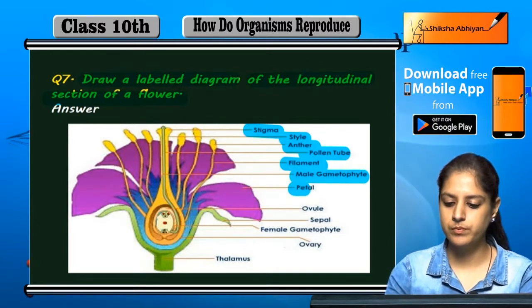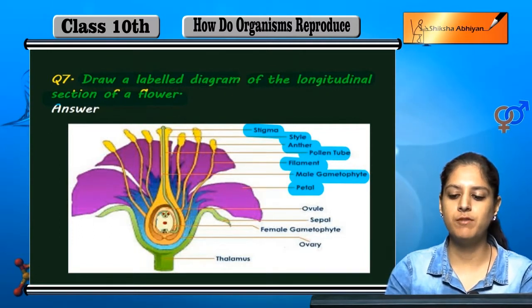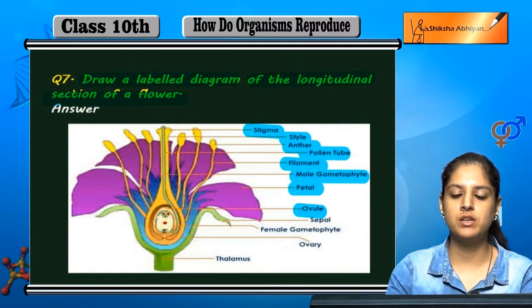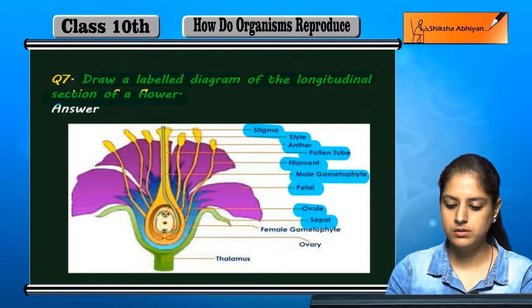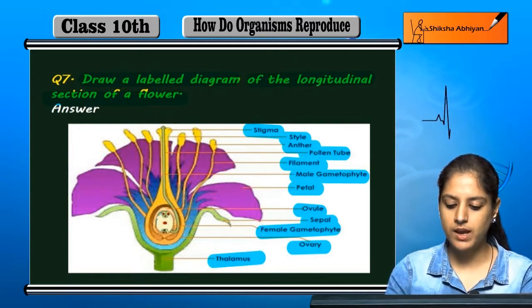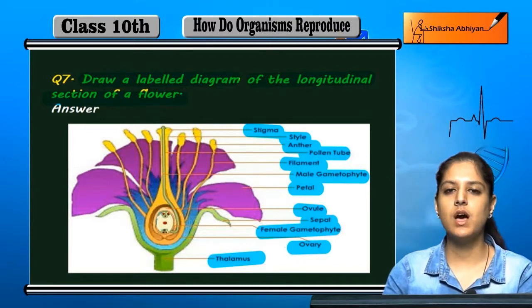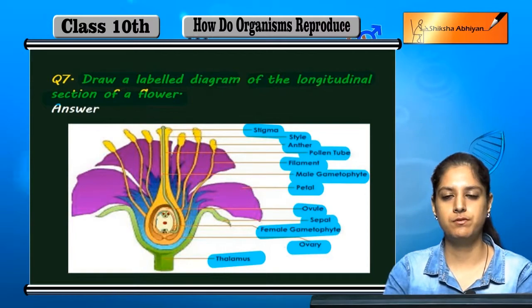The inner portion contains the petals, which is the colorful portion of the flower. The ovule is the female reproductive portion of the flower. The sepal, female gametophyte, and ovary are all female parts of the flower. The thalamus holds everything together. This is the complete longitudinal section of a flower.